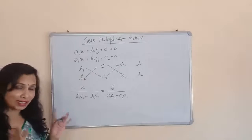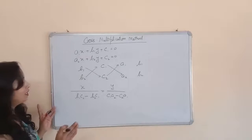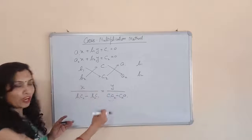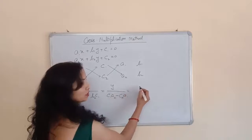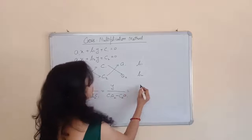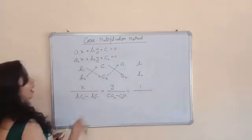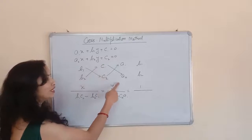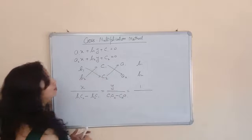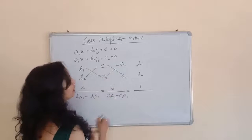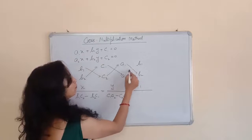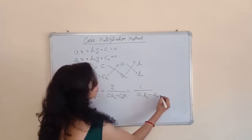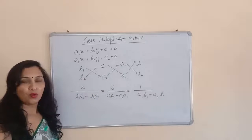You should understand what we have to write below x, what below y, and what comes next — that is 1 upon. So: x upon b1c2 minus b2c1, y upon c1a2 minus c2a1, and 1 upon a1b2 minus a2b1.